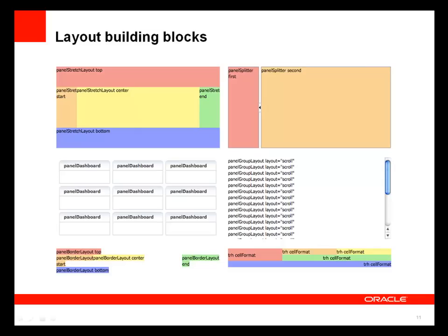The panel group layout is used extensively and gives you a series of components. With the layout set to scroll, you get a vertical scroll bar. You can also set it to horizontal, vertical, or default. The panel border layout is a flowing, scrollable frame with top, start, center, end, bottom, and additional facets — giving you control over the placement of all the Chrome attached to a page, such as copyright notices, menu bars, and title formats around the main content.